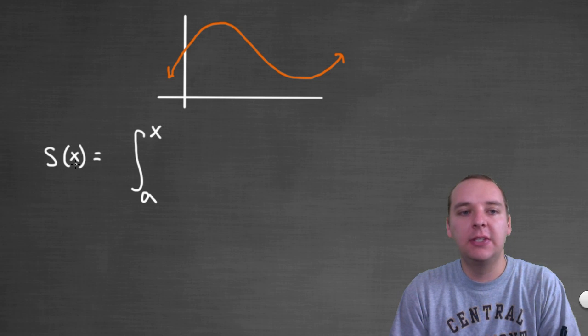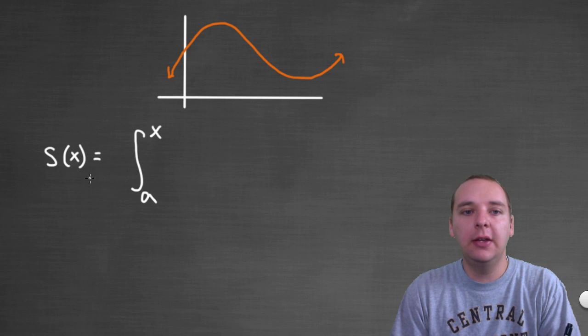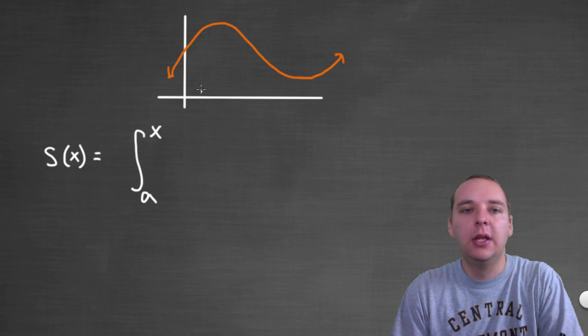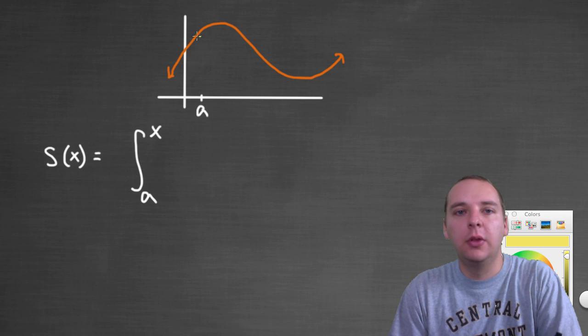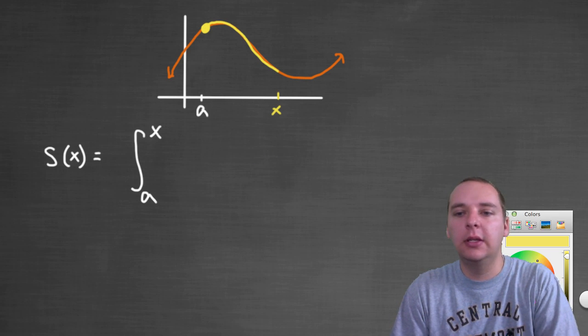So we can ask what s of 7 is, or s of 9, or s of 10, and that'll be the length from a to 7, or a to 9, or a to 10, right? So let's just say that a is here, and we can see how this would play out here. You would go from a up to whatever the chosen x coordinate is.